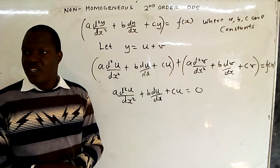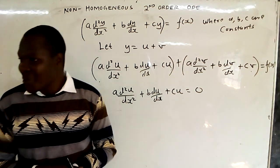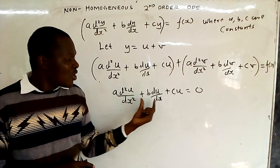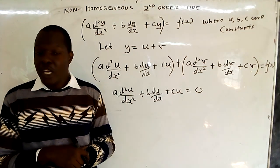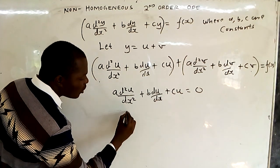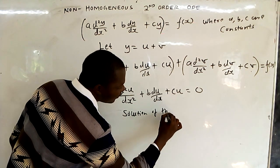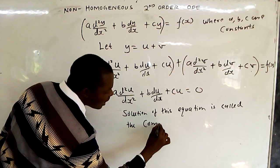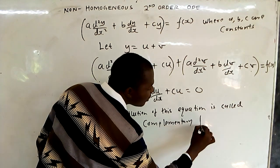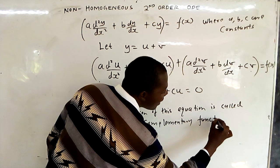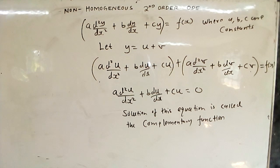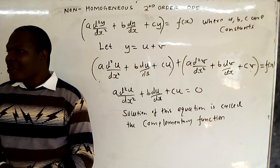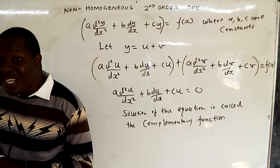The first equation — equated to zero — is actually the homogeneous ordinary differential equation. The solution of this first equation is called the complementary function (CF). The complementary function is found the same way as the solution to a homogeneous second-order ODE, using the D-operator method.